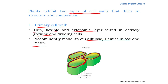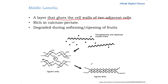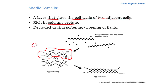The middle lamella is the layer that glues the cell walls of two adjacent cells. In the figure, the yellow-colored middle layer found between the primary cell walls of two adjacent cells is the middle lamella. This middle lamella is rich in calcium pectate. Pectin is synthesized as chains of galacturonic acids and exported to the exterior of the cell as methyl pectate, and then methyl esterases remove the methyl group from the pectin molecules.